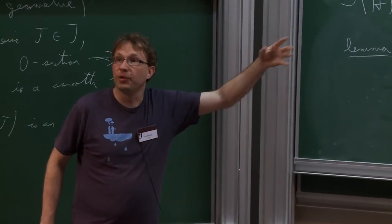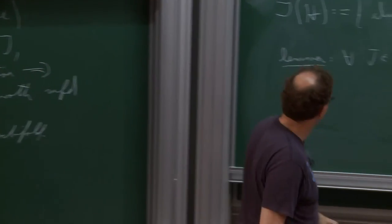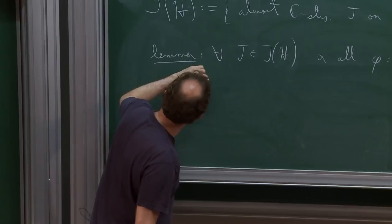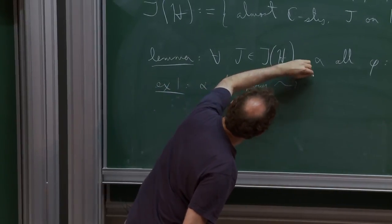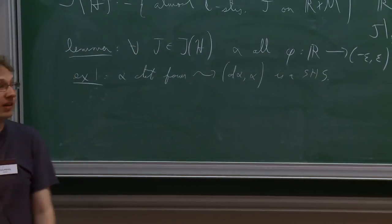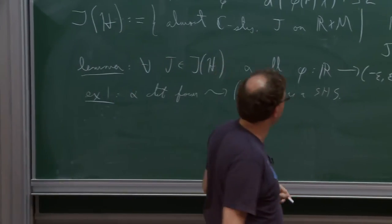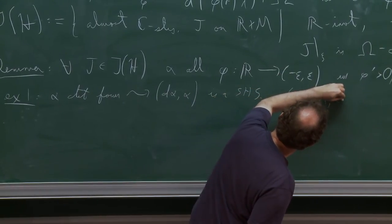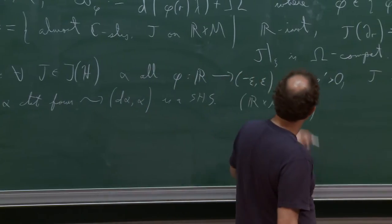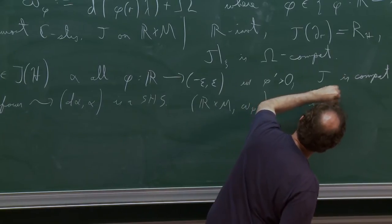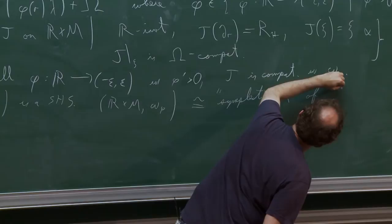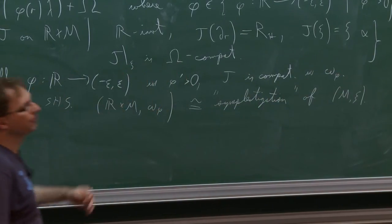Here's a fact which is very easy to prove and sort of helps justify all these definitions: for all choices J in this space of translation invariant almost complex structures and all functions phi as indicated above, mapping to that small interval with positive derivative, it's not just that omega_phi is symplectic, but in fact it's compatible in the usual sense of Gromov with this choice of J. So I can fix J and then allow any choice of phi I want. And that's an important detail for defining things like the energy of a j-holomorphic curve, because we then take that to be the supremum of symplectic area defined with respect to all these different choices of symplectic forms.